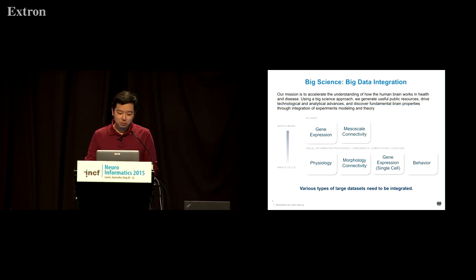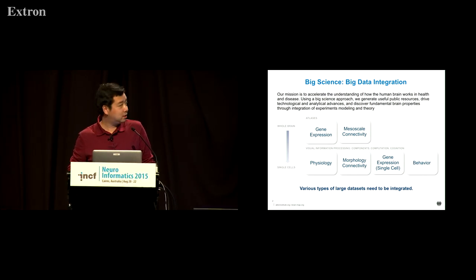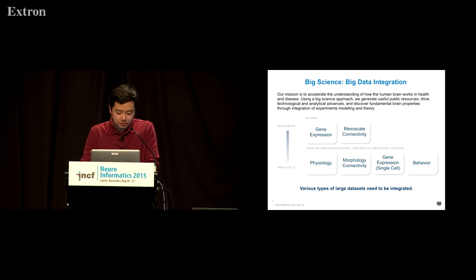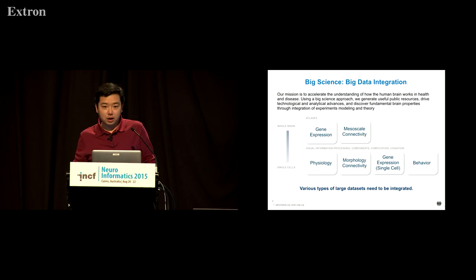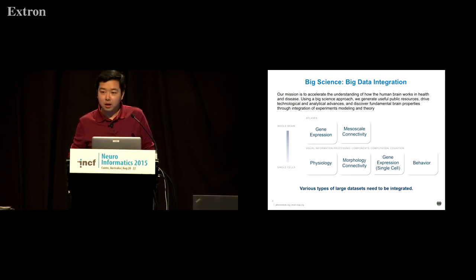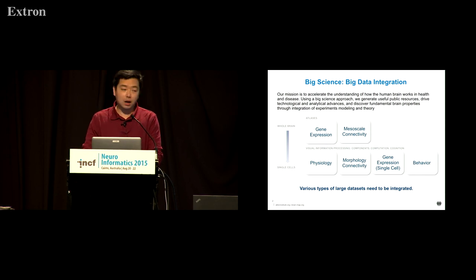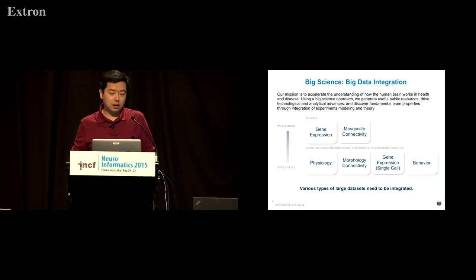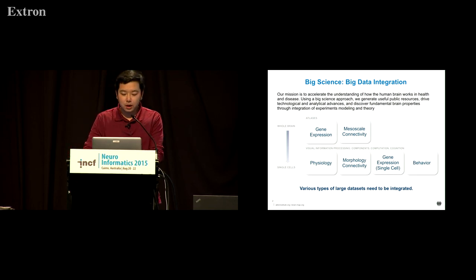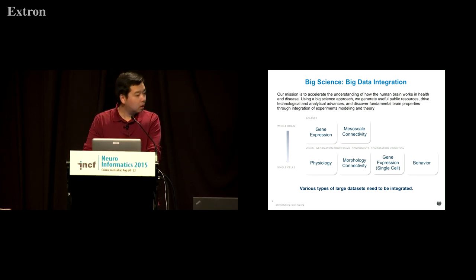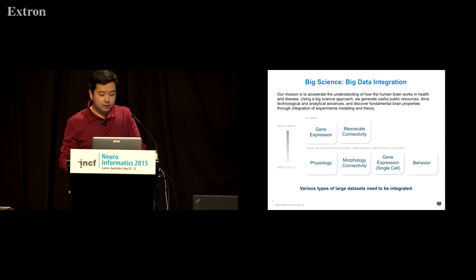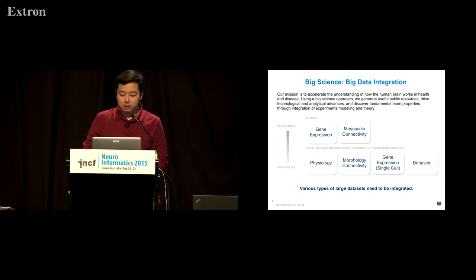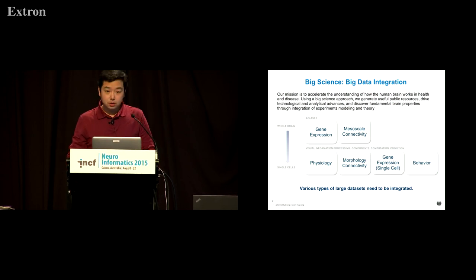That's the Allen Institute for Brain Science. Our mission is to accelerate the understanding of brain using the big science approach and generating useful public resources. In our current 10-year plan, our aim is to understand how the brain works with the initial focus on the visual system. We are trying to find out how visual information is represented and analyzed by neurons and how we perceive this information to make decisions. To support this effort, we are generating various types of datasets, and integrating this multi-scale and multi-modality data is a challenge by itself.